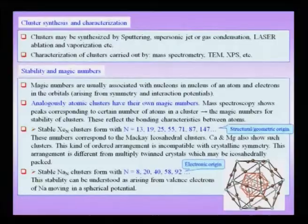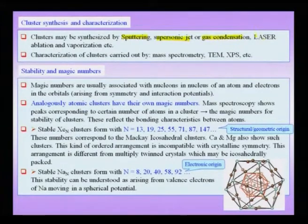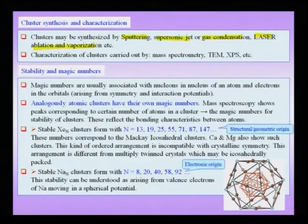Let us consider a few more points about clusters and importantly about what we call the magic numbers associated with some of these clusters. Clusters can be synthesized by various techniques like sputtering, supersonic jet or gas condensation, laser ablation, vaporization etcetera. Some of these clusters are very suitable for ceramic materials while others may be good for carbon and other specific kinds of compounds whose clusters we want to construct.